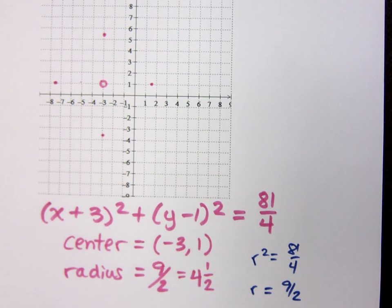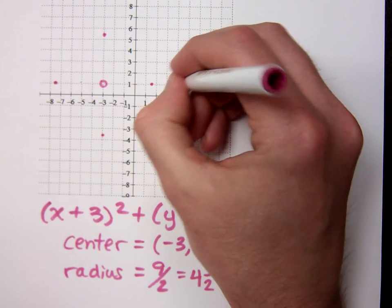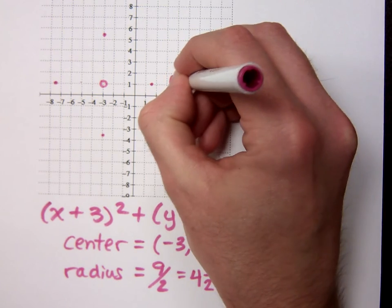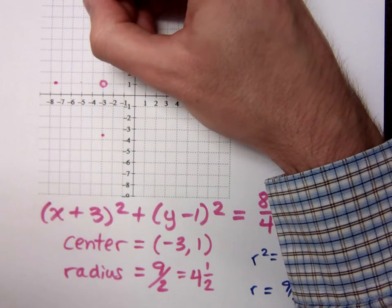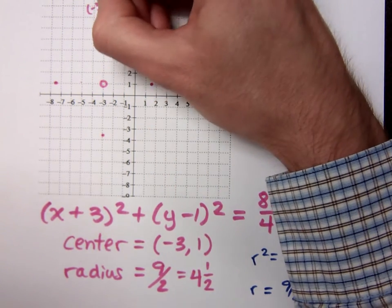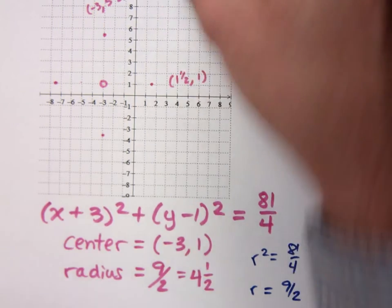Does that look about right, what you guys have? We should have this point over here at 1 and a half, 1. This point is at negative 3, 5 and a half, and so on.